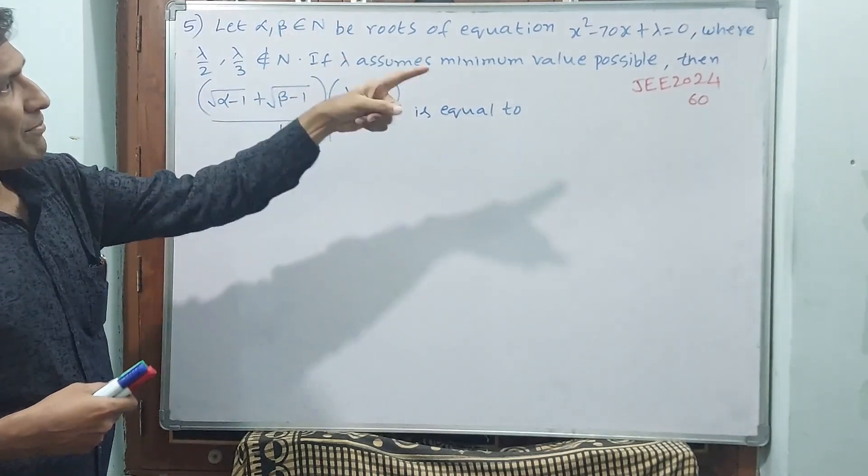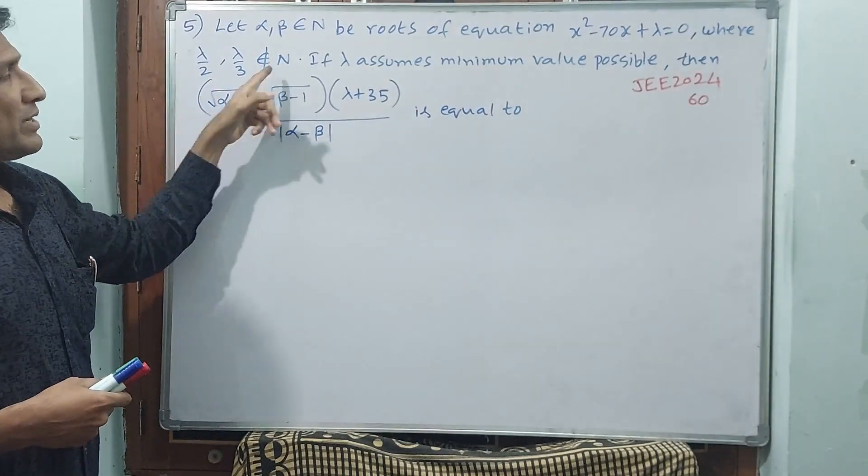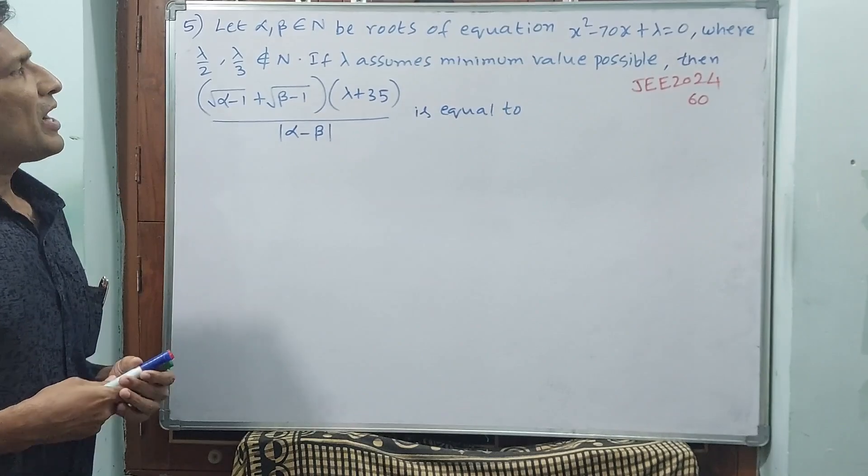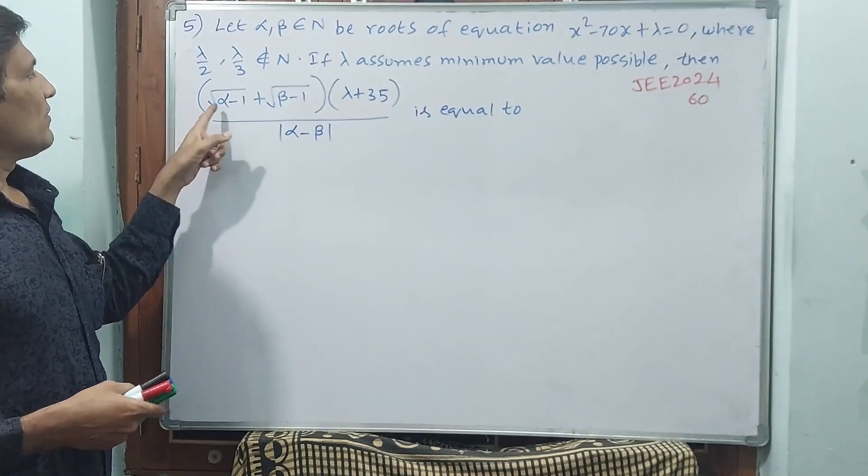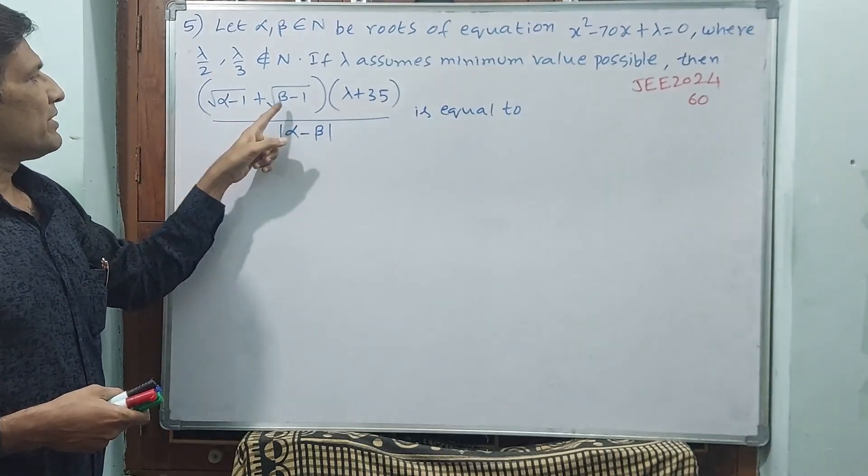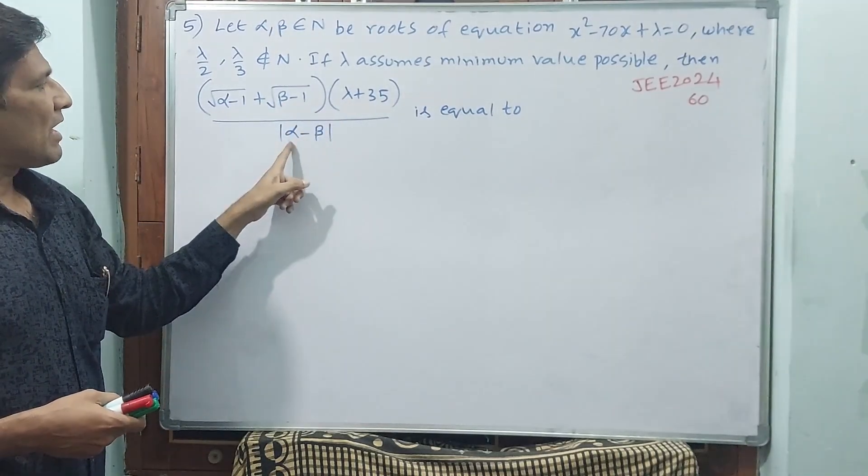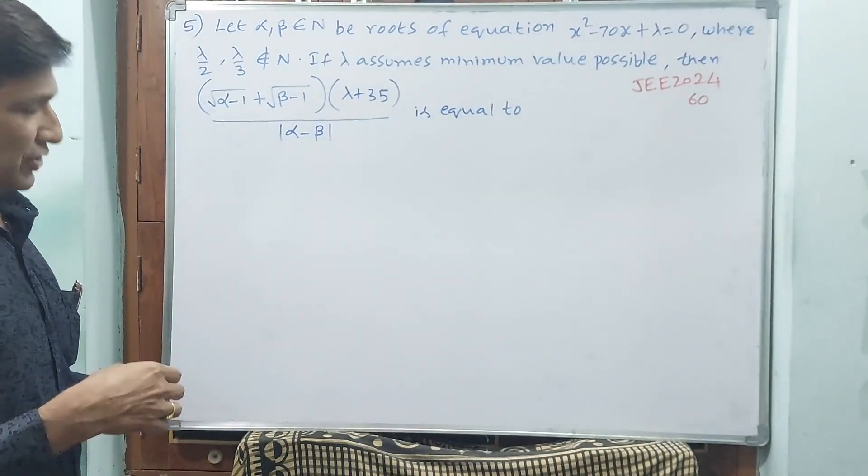That means λ should not be divisible by 2 or 3. If divisible by 2 or 3, it would become a natural number. If λ assumes minimum value possible, then what is the value of (√(α-1) + √(β-1)) × (λ+35) / |α-β|? The answer has to come 60.